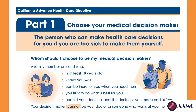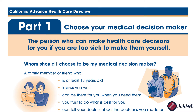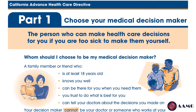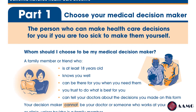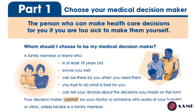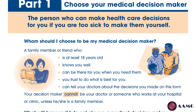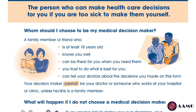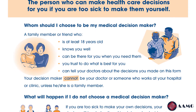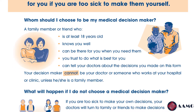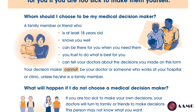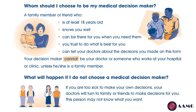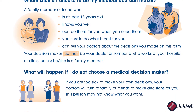Your medical decision maker is a person who can make healthcare choices for you if you're too sick to make them for yourself. The first question here is: whom should I choose to be my medical decision maker? This goes over the criteria and qualifications. This person can be a family member or a friend who is at least 18 years old, knows you well, can be there for you when you need them, someone you trust to do what is best for you, and can tell your doctors about the decisions you made. Importantly, your medical decision maker cannot be your doctor or someone who works at the hospital or clinic, unless that person is a family member.